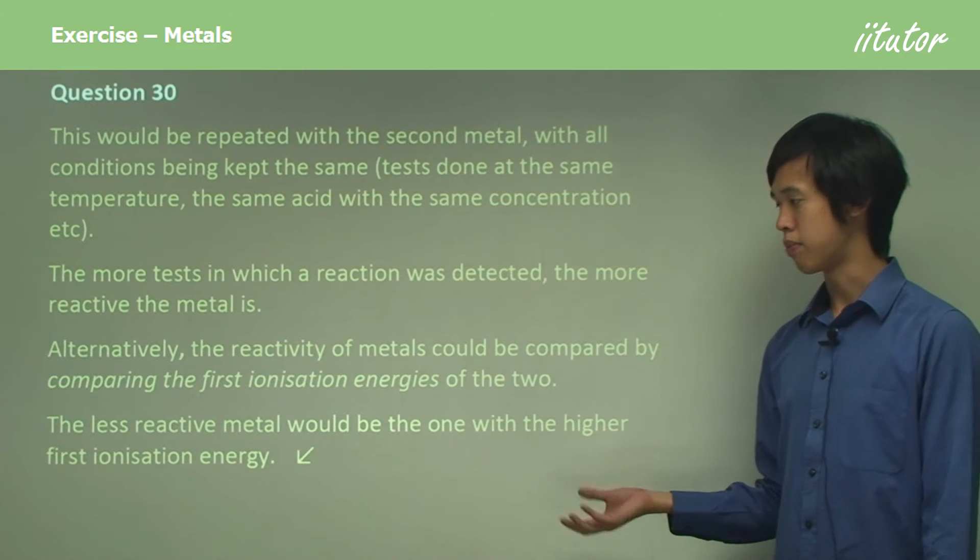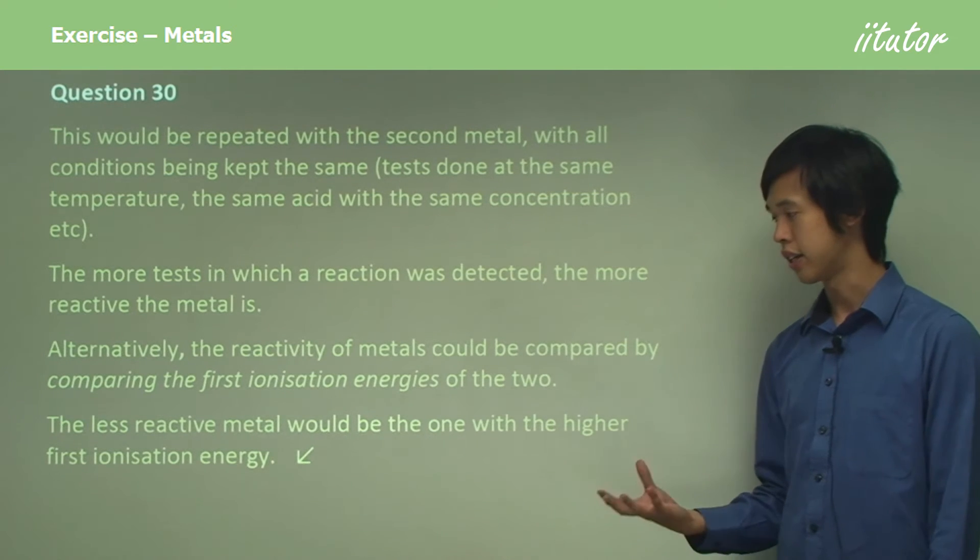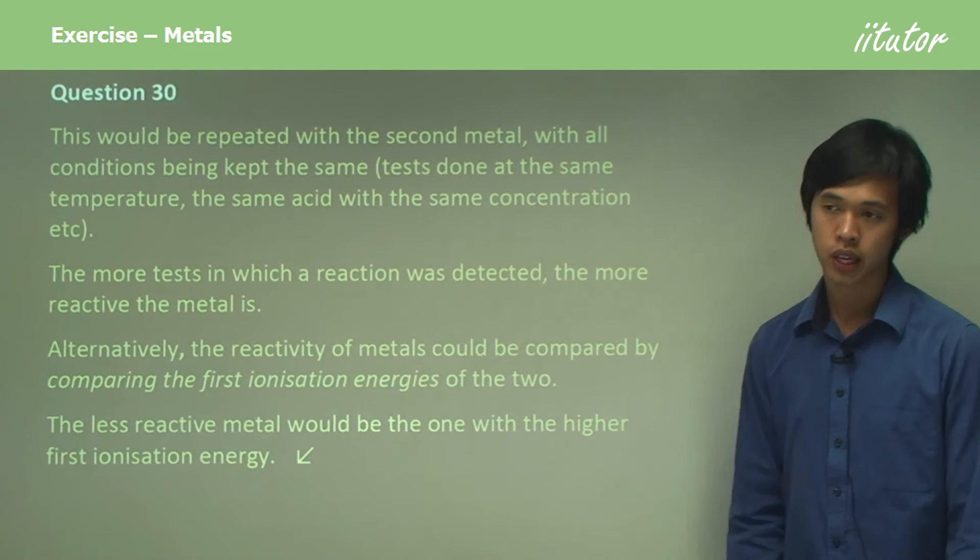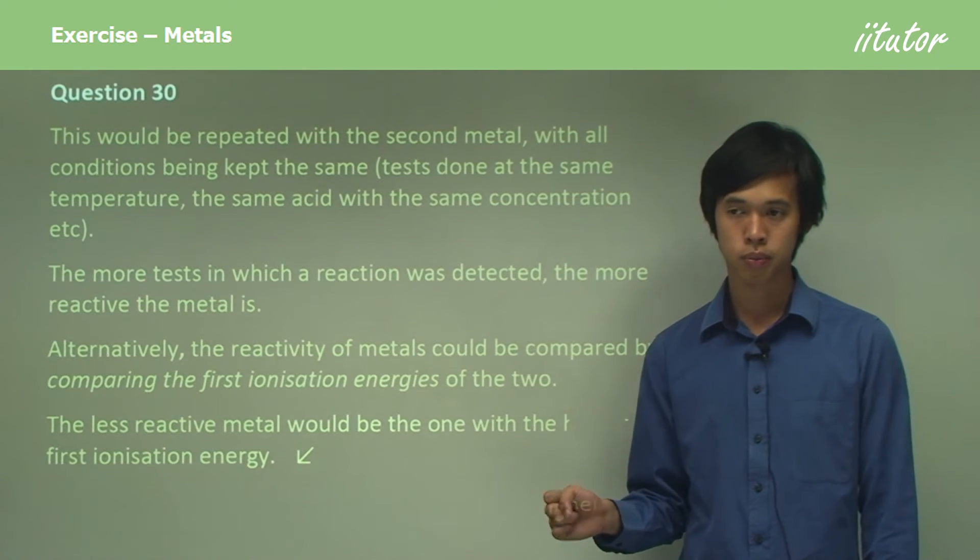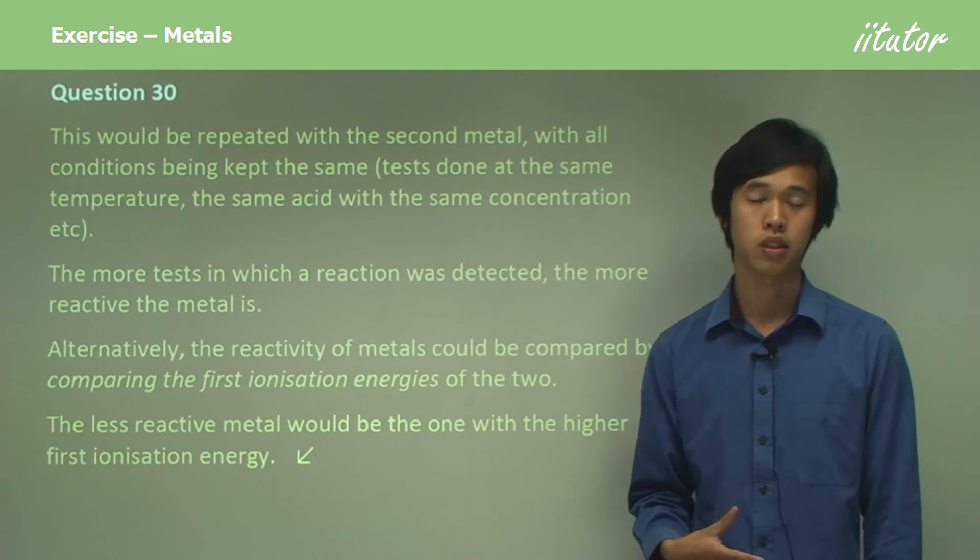The less reactive metal would be the one with the higher first ionization energy. So what that means is it's harder to remove that one electron. If so, it's going to be less reactive.